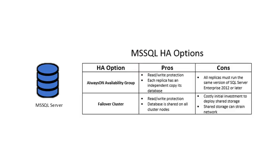Microsoft SQL has a couple HA options. The first is an availability group, where each replica will have its own independent copy of the database. This means that all of your replica servers must be running the same version of SQL Server Enterprise 2012 or later.